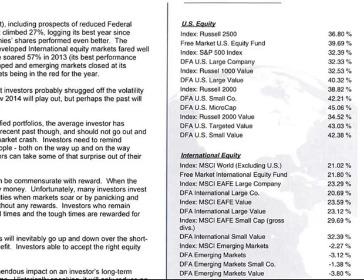Just remember this: the first number where it says 'index' is the overall benchmark we're comparing ourselves to. The second one — the Free Market U.S. Equity Fund — shows how we did against that benchmark. So if you see the S&P 500 index at 32.39%, then the DFA U.S. Large Company Index at 32.33%, that DFA is the respective large company portfolio built into the Free Market U.S. Fund. We compare that specific part of the portfolio to the S&P 500. All the way down the line you'll see the index first, like Russell 1000 Value, and then the DFA U.S. Large Value — that's how we outperformed that index by a significant amount.